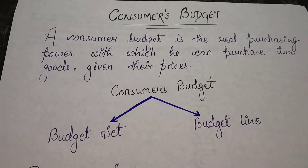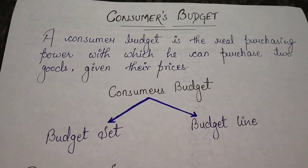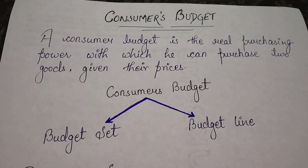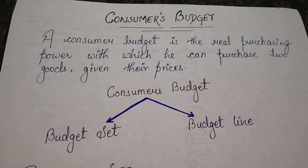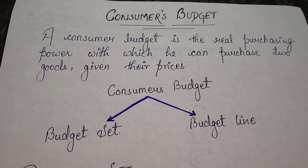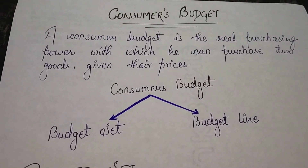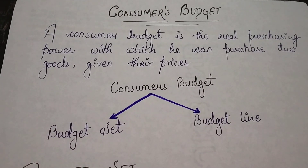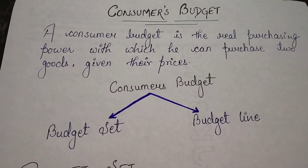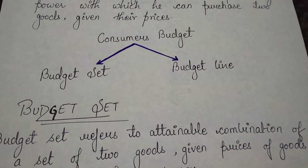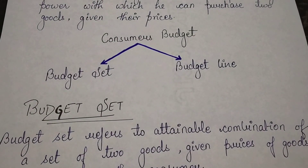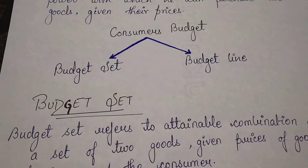Now we have to discuss the economical definition. In an economic sense, a consumer budget is the real purchasing power within which he can purchase any two commodities at their relevant prices. Under consumer budget there are two different terms: budget set and budget line.